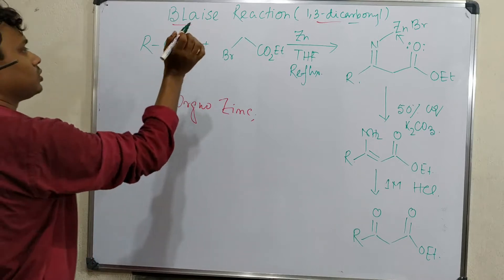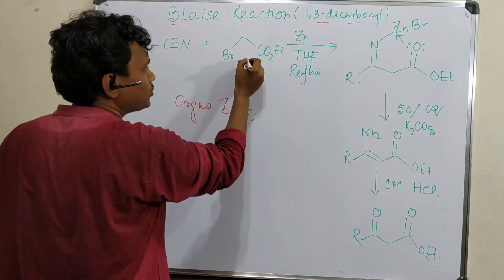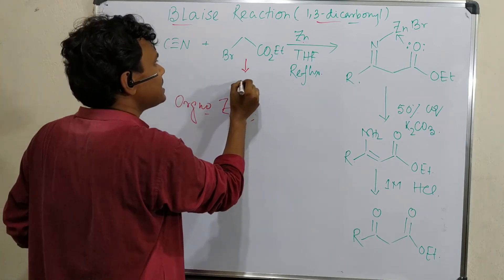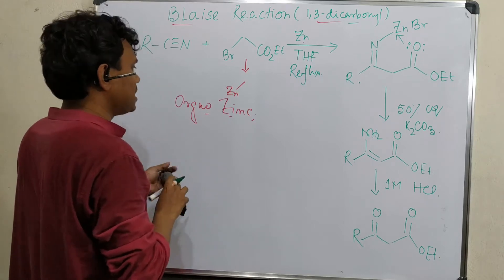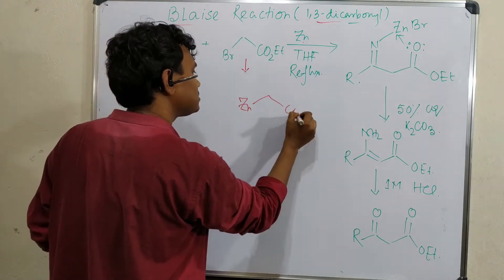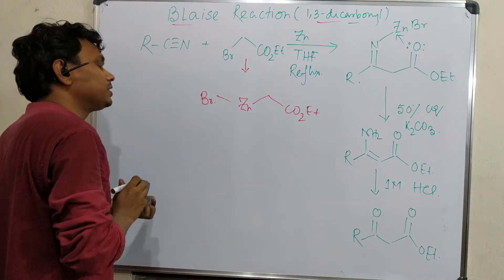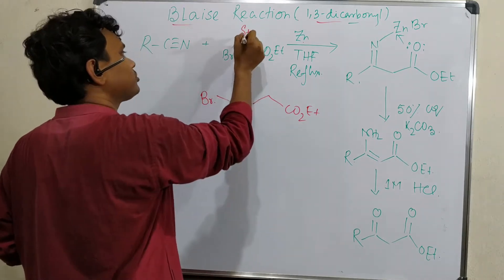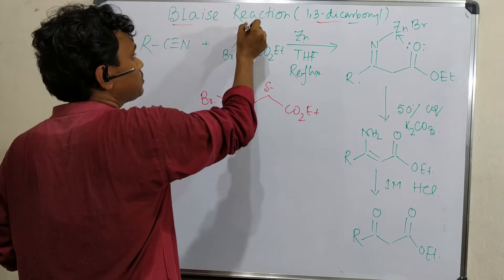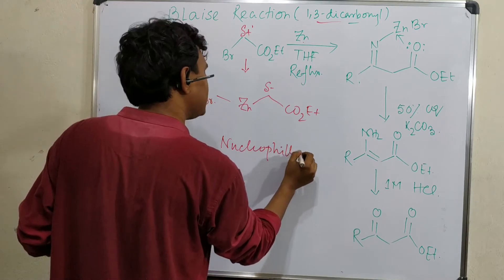First, the mechanism: as I told, it produces an organozinc reagent. This zinc reacts with this alpha-haloester — as we have taught previously — it produces this carbon-zinc bond. Zinc is incorporated into the organometallic reagent. Previously this carbon was delta-positive because of the halide and CO2Et, and right now this carbon is delta-negative. So previously it was electrophilic and right now it is nucleophilic.